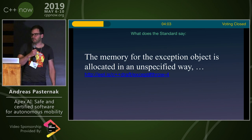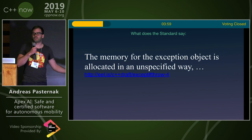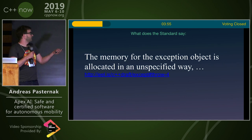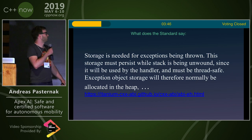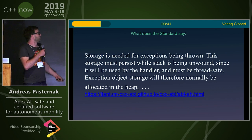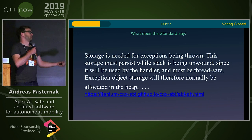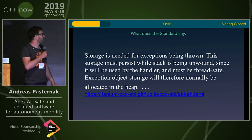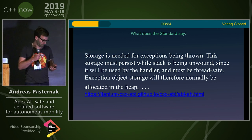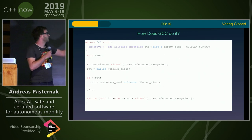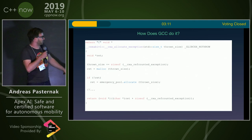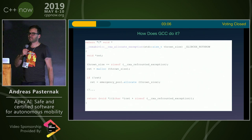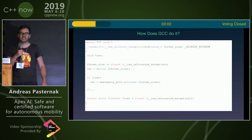Let's dig a little bit deeper. Maybe we go to a specific ABI, for example the Itanium C++ ABI, which is used by GCC, and see if they give us a bit more precise answer. If we look at the Itanium C++ ABI, it says: storage is needed for exceptions being thrown. This storage must persist while the stack is being unwound — that makes sense, because if you throw an exception, you leave your stack pointer and it starts moving around. Since it will be used by the handler, it must be thread safe. So exception object storage will therefore normally be allocated in the heap. And if you look at the GCC code, how does GCC allocate an exception? It has this allocate exception function, and we actually see a malloc — so it just calls malloc to allocate the exception. One funny thing is also this emergency pool: so even if you run out of memory, your bad_alloc will still work because you can still get around 16 or so exceptions out of this emergency pool.